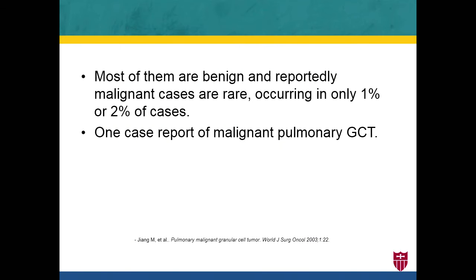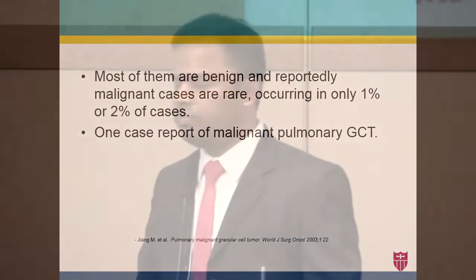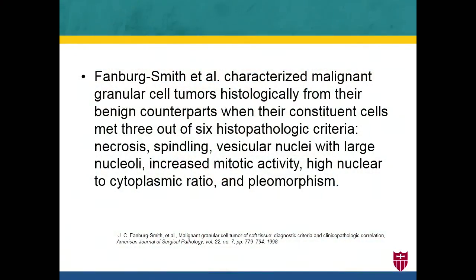Most of these tumors are benign. There has been only one case report of a malignant pulmonary granular cell tumor, described in 2003 by Dr. Jiang. Even in that case, it had not metastasized and was resected, and the patient was fine on follow-up. The diagnostic criteria for malignant granular cell tumor, described by Dr. Fanberg and Smith, include six criteria: necrosis, spindling, vesicular nuclei with large nucleoli, increased mitotic activity, high nuclear-to-cytoplasmic ratio, and pleomorphism. Meeting three or more of these six criteria qualifies as malignant disease. The one reported case of pulmonary malignant granular cell tumor met five of the six criteria.